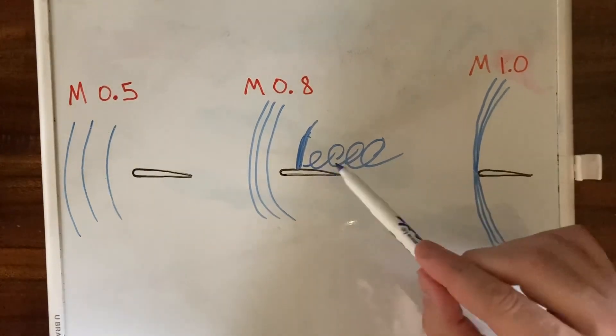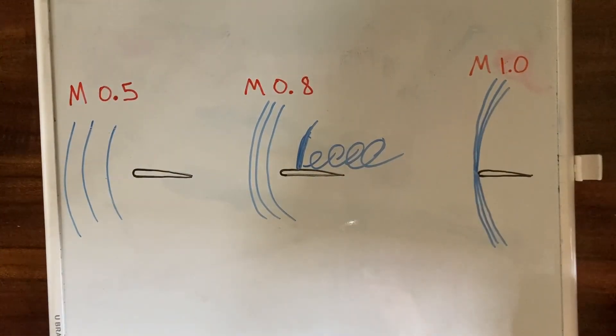It also affects the center of pressure. Now that the whole wing isn't producing lift anymore, but just part of it, the center of pressure shifts.